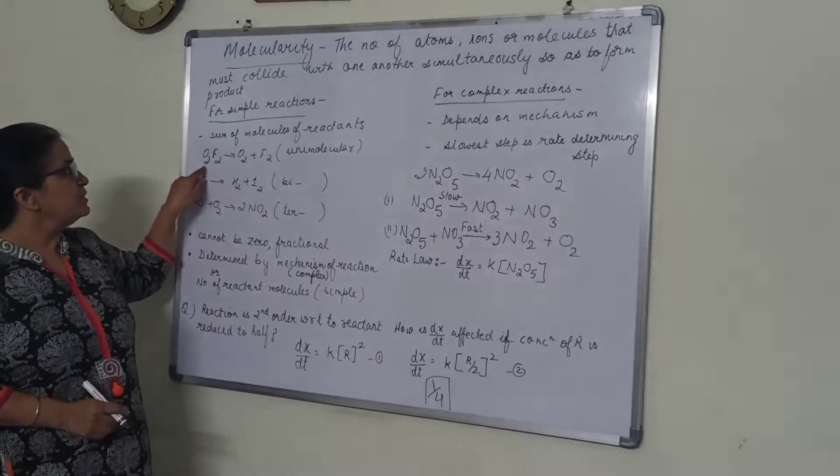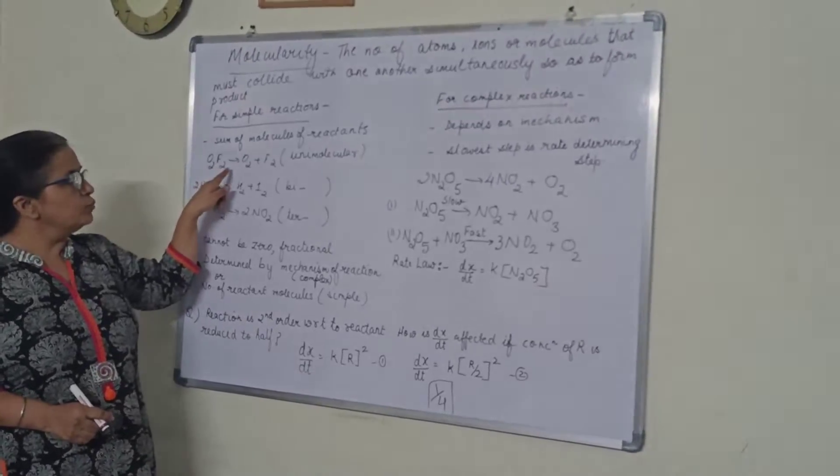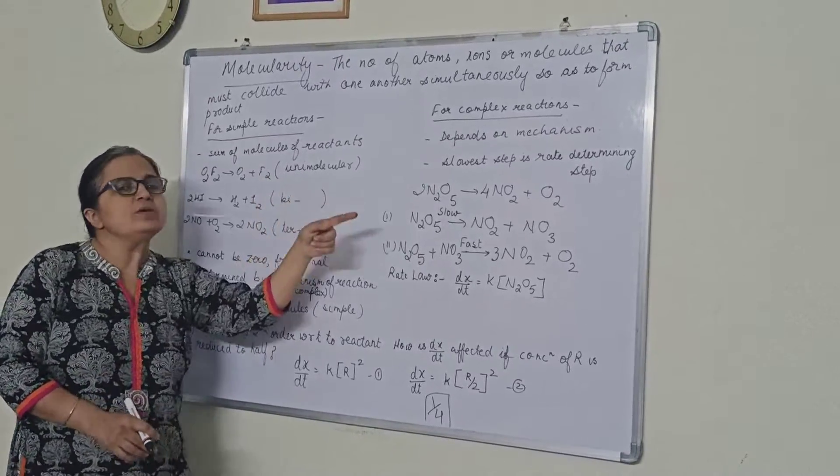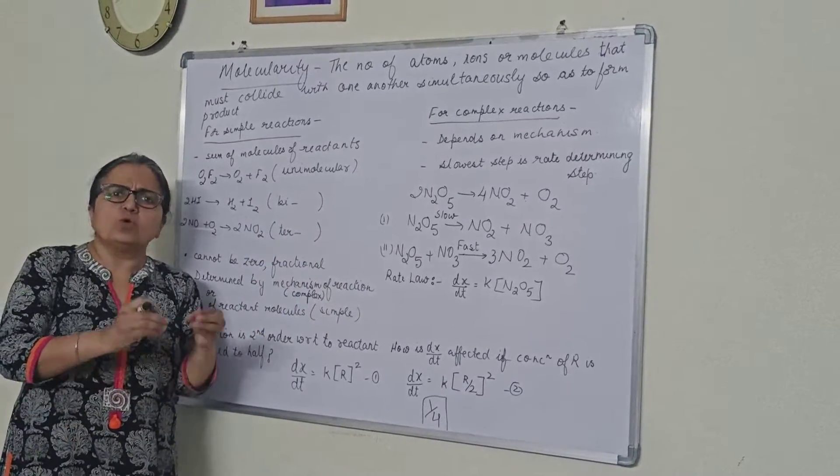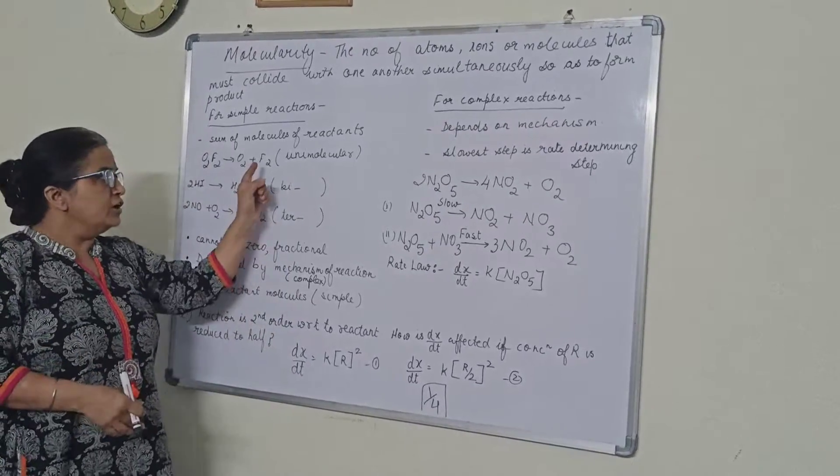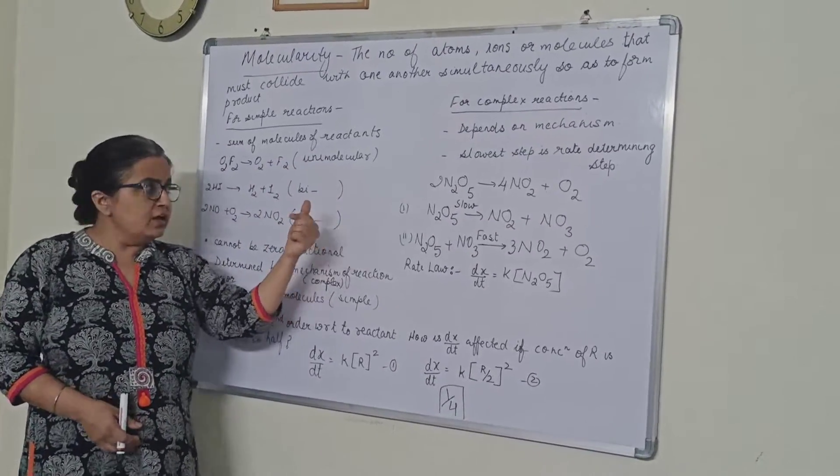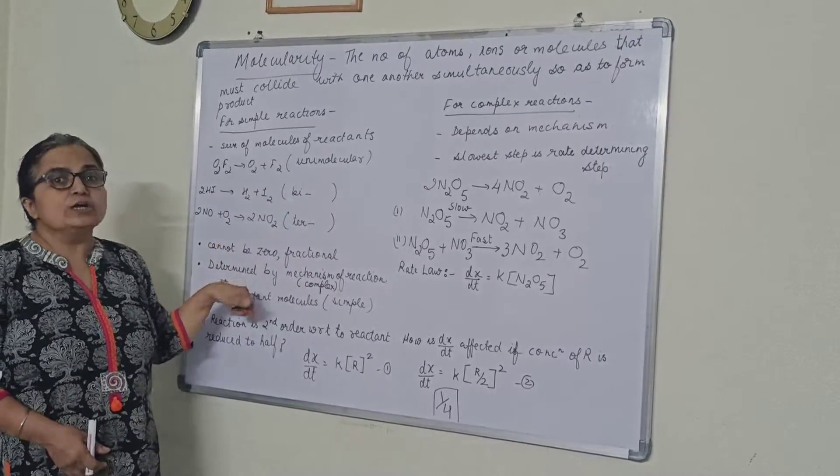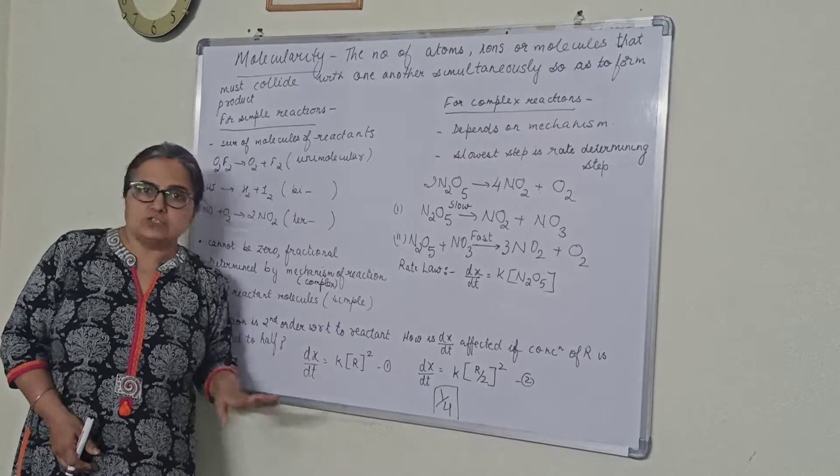For example, O2F2 forming O2 plus F2. One molecule is shown, it is called as unimolecular. Based upon what is the molecularity, we can term the reaction as a unimolecular reaction. If the molecularity is 2, bimolecular reaction. If it is 3, termolecular reaction and so on.